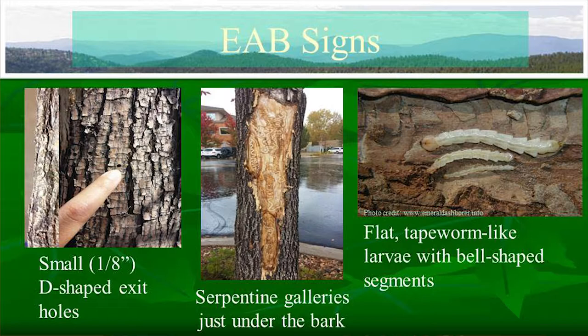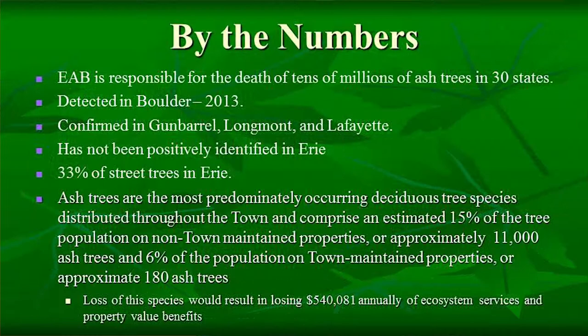For actual signs of EAB, look for a D-shaped exit hole about one-eighth inch in size where the adult insect flies out. Also look for serpentine galleries — each boring insect has its own signature gallery shape, and EAB has a very winding gallery. Then there's actually finding evidence of the larva. Without finding at least one of those three signs, we can't definitively say a tree has EAB.